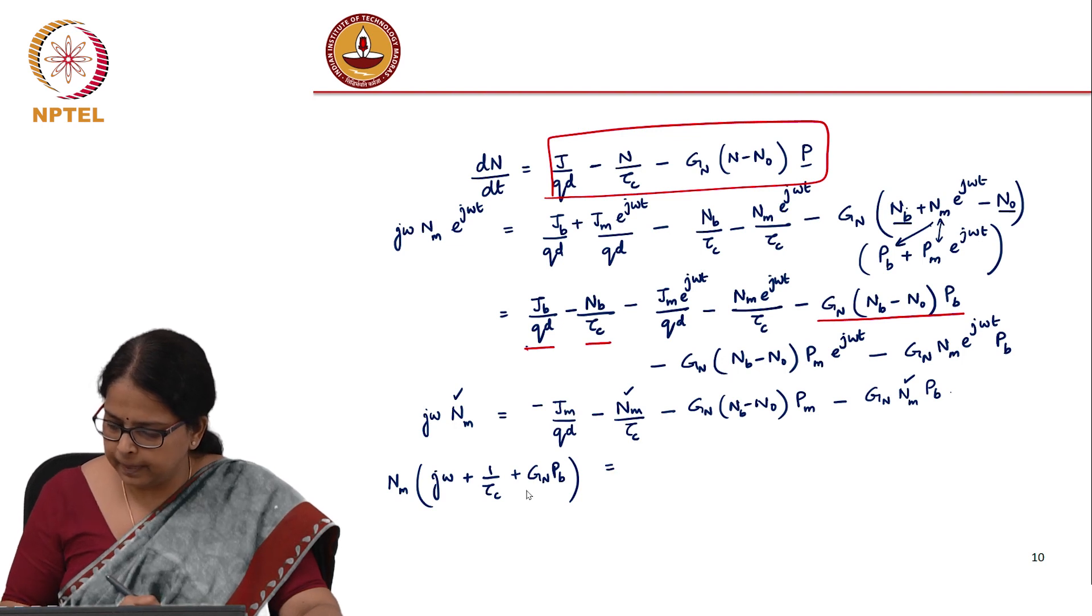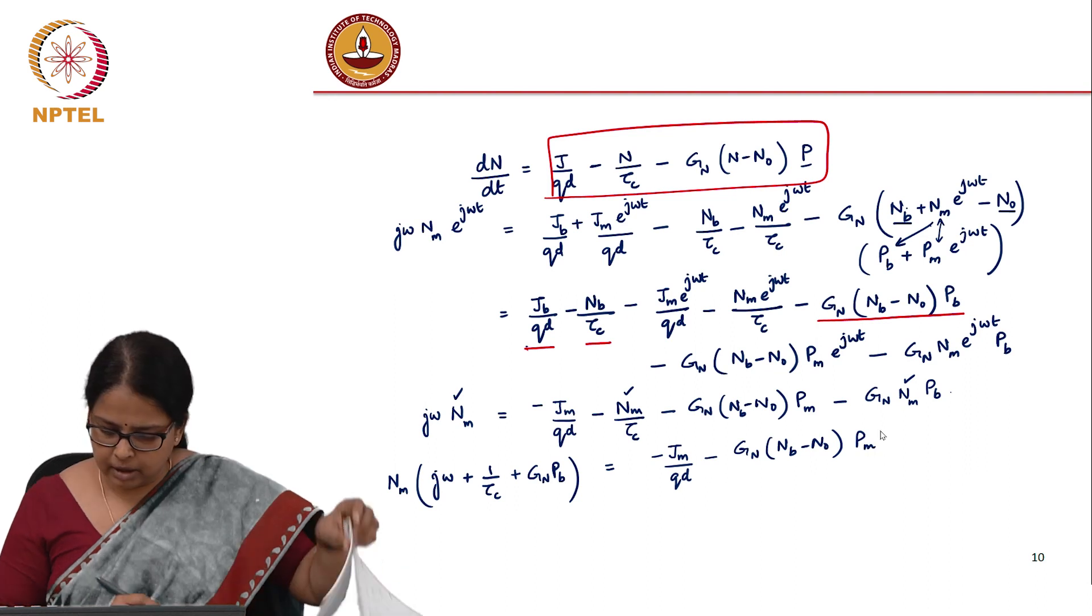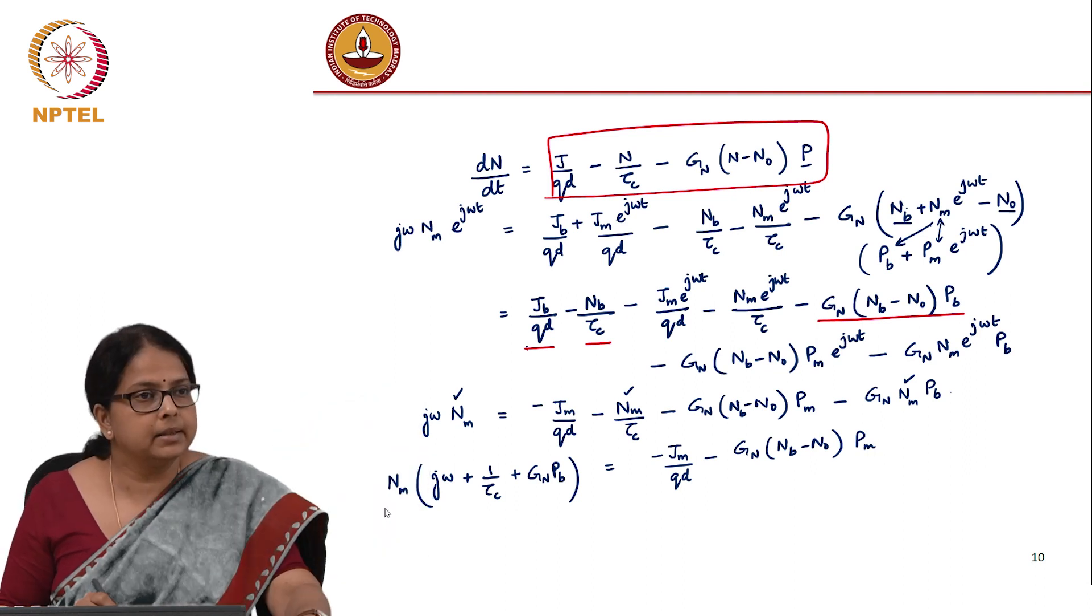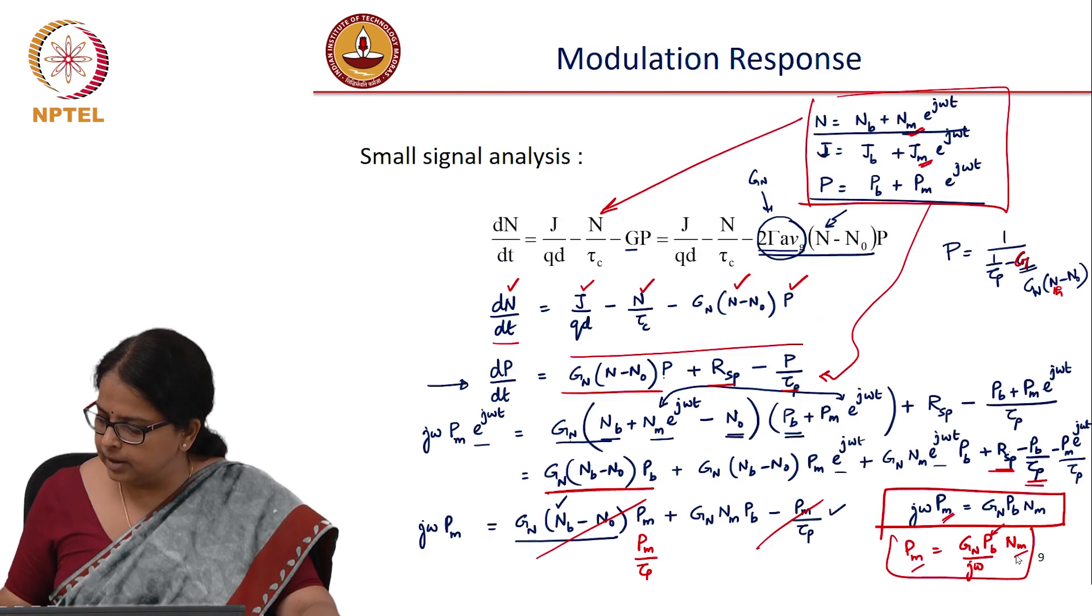This equals j_m/(qd) minus g_n*(n_b - n_0)*p_m. Now I know what n_m is. n_m came from here in terms of p_m.